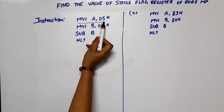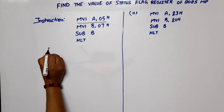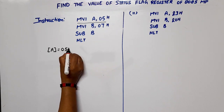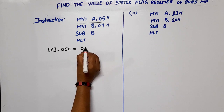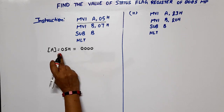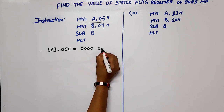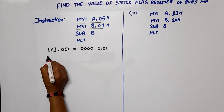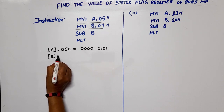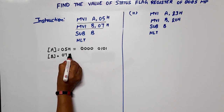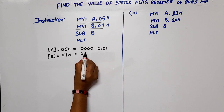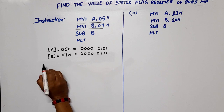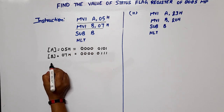The first instruction is MVI A, 05H — after execution, the content of the accumulator is 05H. In binary, we write four zeros followed by 0101. After the next instruction, MVI B, 07H, the content of register B is 07H. In binary: 00000111.